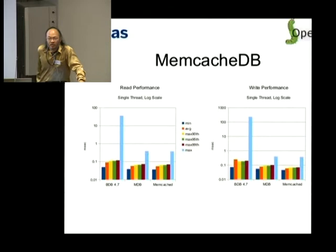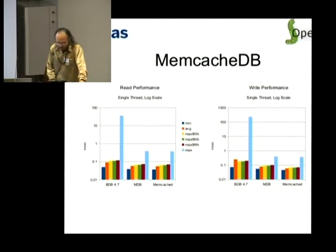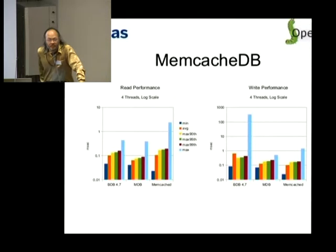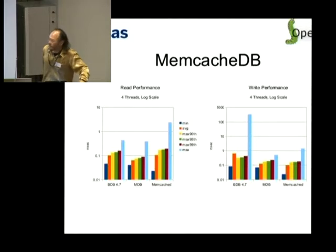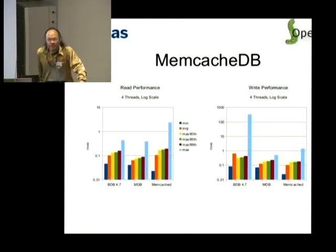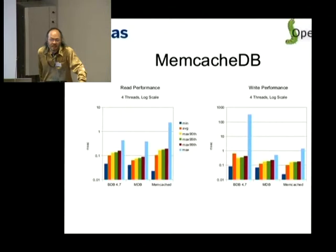When you introduce multiple threads — testing with four threads — you see something very interesting: MDB is actually faster than the pure in-memory memcached. The reason is that memcached uses multiple locks in its data structures. With LMDB, since readers do no locking, we can scale to any number of threads without any degradation.